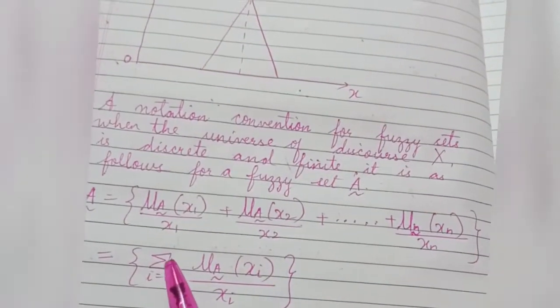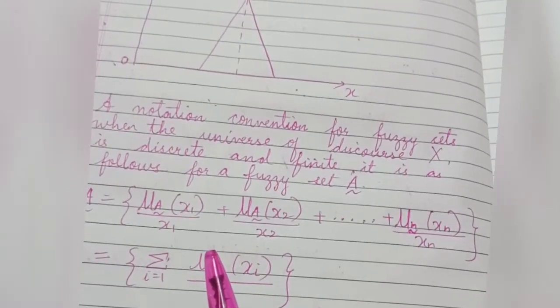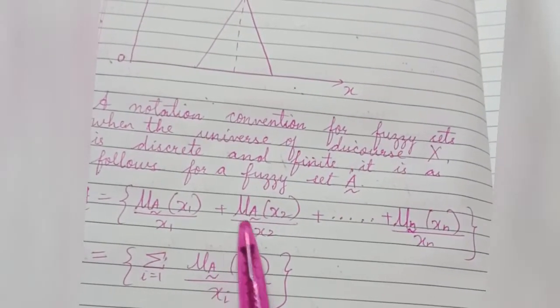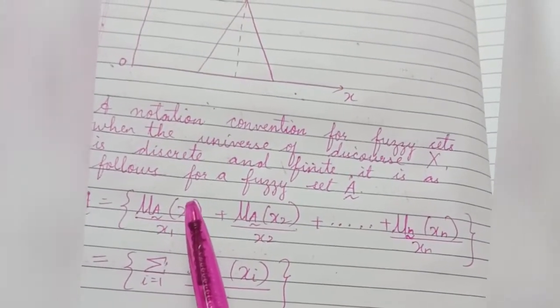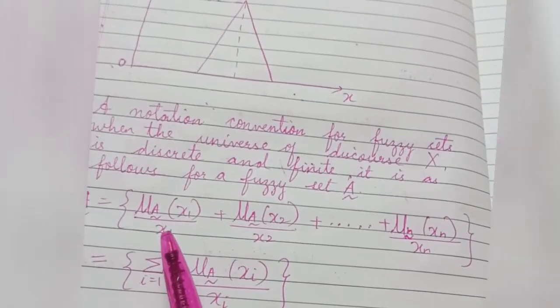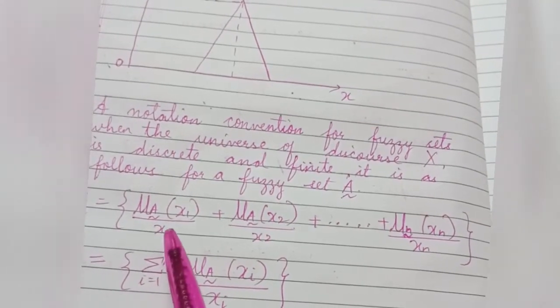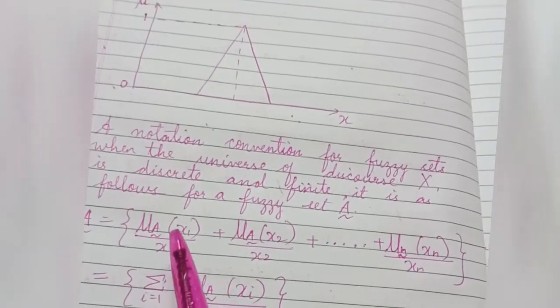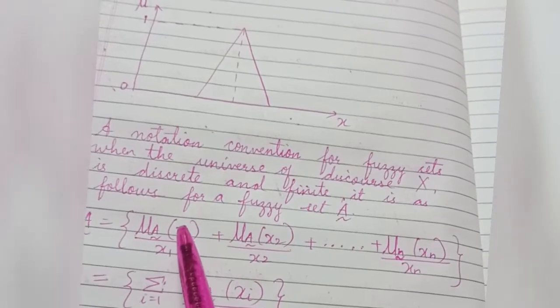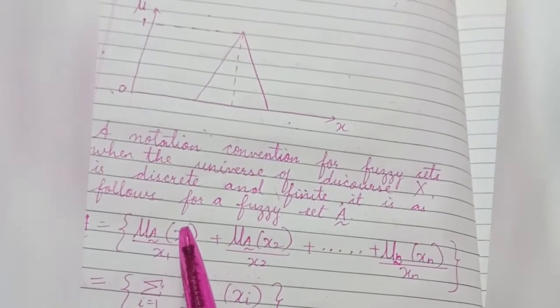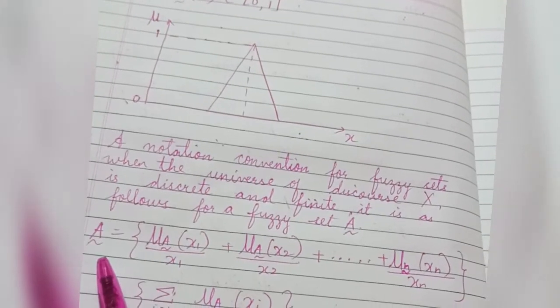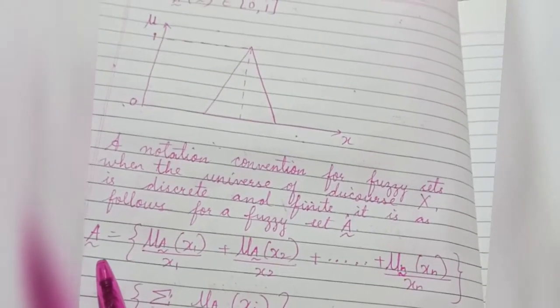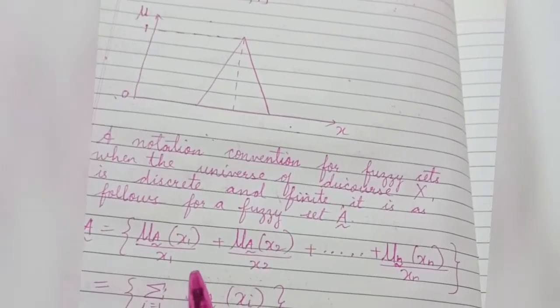Here in this notation, in the above notation, it is not quotient but a denominator where the denominator is the element of universe, that is X1. The numerator in each term is the membership value in set A associated with the element of universe indicated in the denominator.